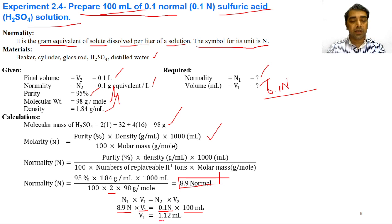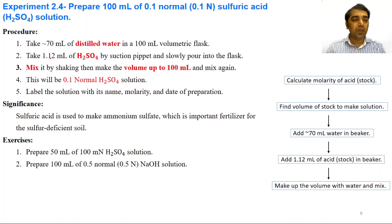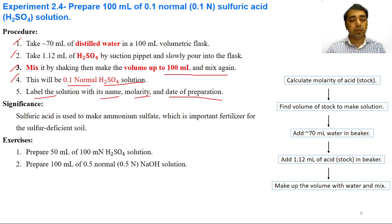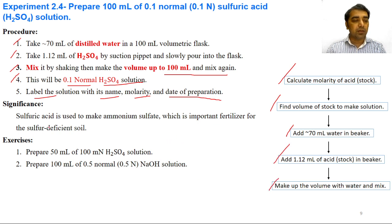The concentrated sulfuric acid has a normality of 8.9 N. Using N1V1 = N2V2, the volume of concentrated sulfuric acid required to make 100 ml of 0.1 N solution is calculated as V1 = 1.12 ml. Procedure: add 70 ml of distilled water to a 100 ml volumetric flask, take 1.12 ml of sulfuric acid by suction pipette and slowly pour into the flask, mix, make volume up to 100 ml, and label. Sulfuric acid is used to make ammonium sulfate, an important fertilizer for sulfur-deficient soils.